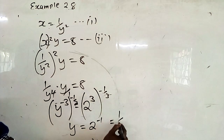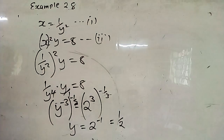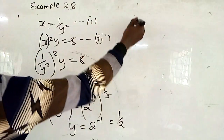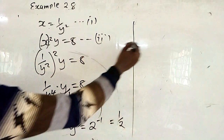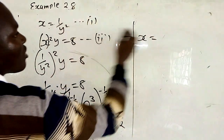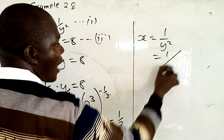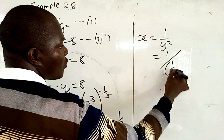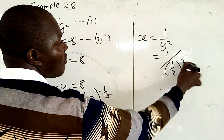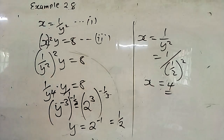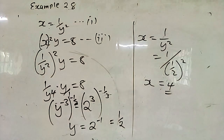2 raised to negative 1 is 1 over 2. So after getting y equals 1 over 2, you find x. Since x equals 1 over y² and y is 1 over 2, we get x equals 1 over (1/2)², which gives x equal to 4.